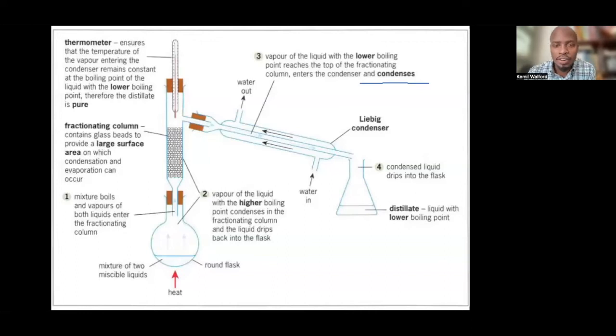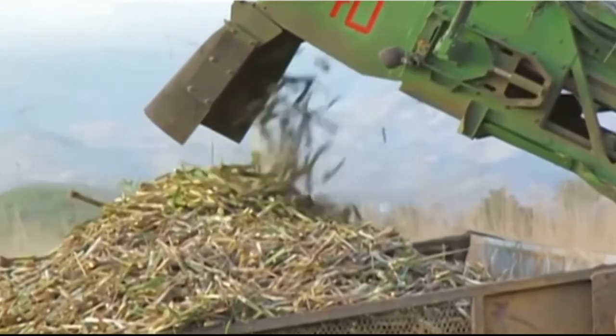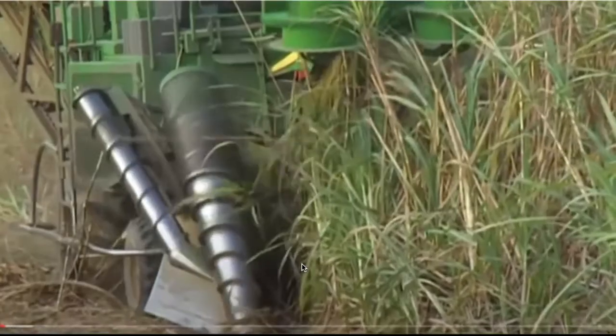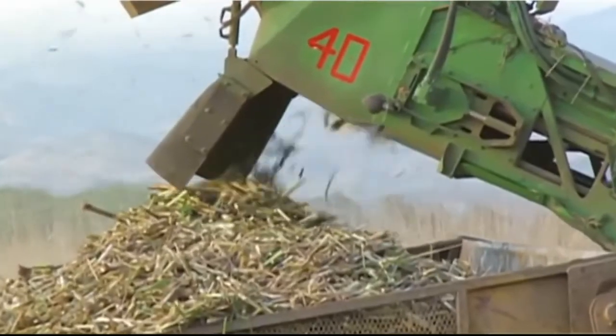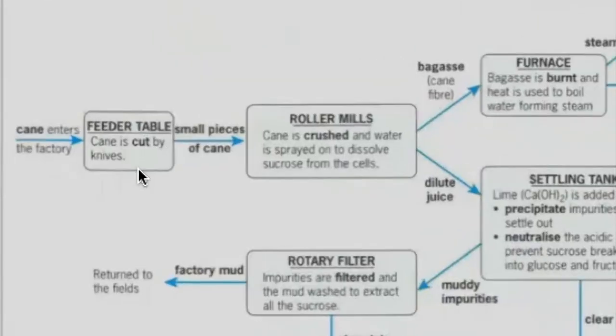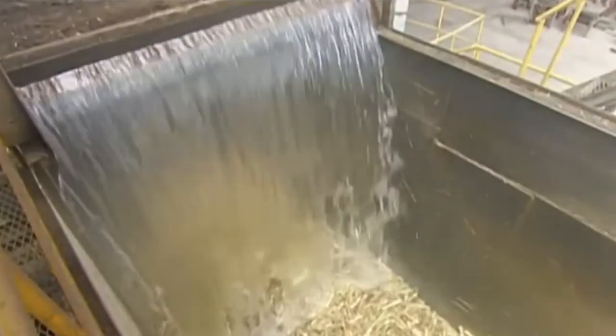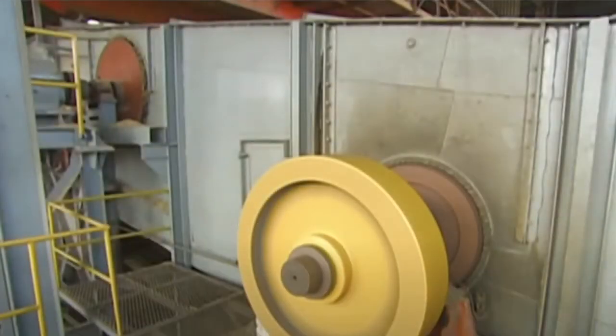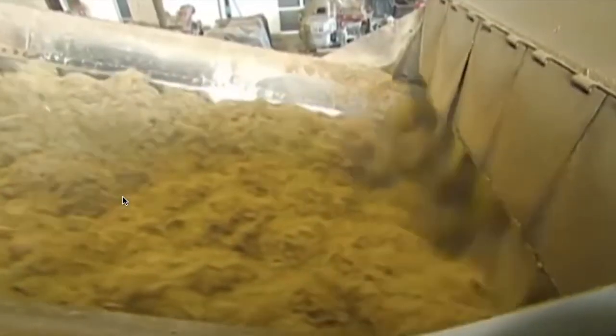Any questions folks? This is an outline of the extraction of sucrose from sugarcane. So the cane enters the factory where I live. I see the cane trucks passing. There's a feeder table where the cane is cut by a series of rotating knives. All right. So that gives us small pieces of cane. Then it passes through the roller mills where the cane is crushed. Water is sprayed on and the whole point of water has been sprayed on is to wash out or to extract the juice from the fiber of the cane.